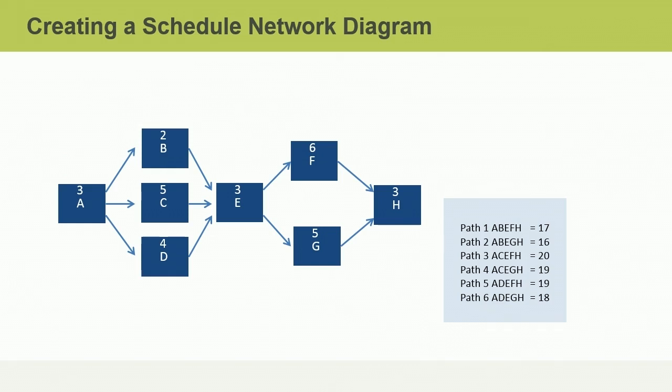Now I will show you the shortcut. Let's start with activity A. Activity A is on all paths, so we will count its duration of three. Next, we have three activities happening simultaneously. We will choose the activity with the longest duration. That is activity C with a duration of five. Activity E is on all paths, so we will count its duration of three. Activity F and activity G happen simultaneously, so we will count activity F with a higher duration of six. Activity H is on all paths, so we will count its duration of three.